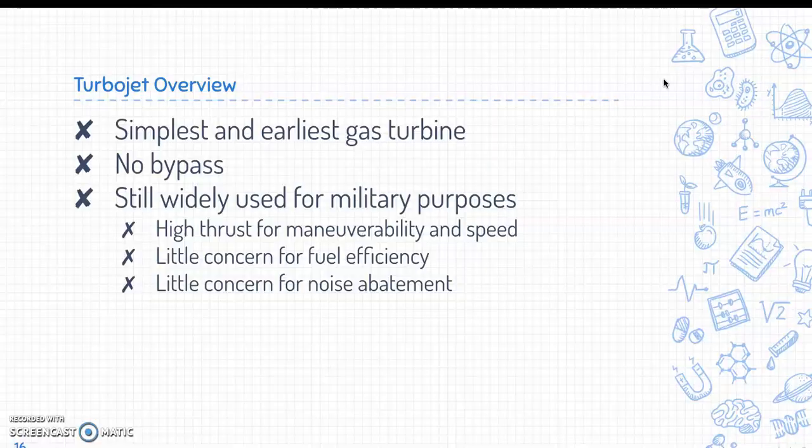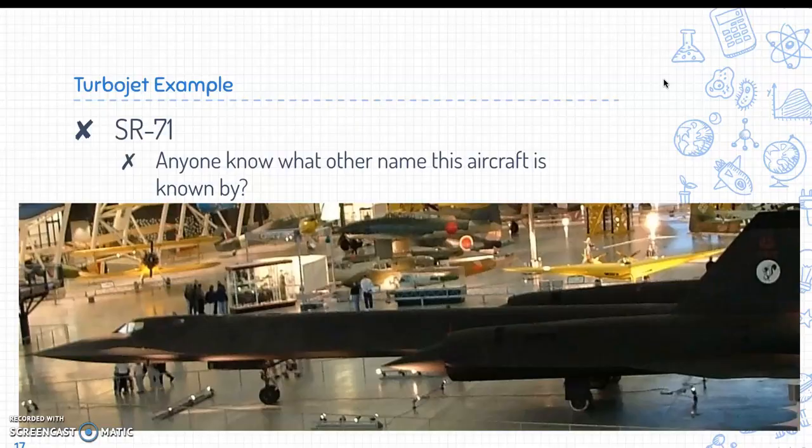The turbojet is the simplest and earliest gas turbine engine. It has no bypass and is still widely used for military purposes. It has high thrust for maneuverability and speed, with little concern for fuel efficiency or noise abatement — meaning they're loud.